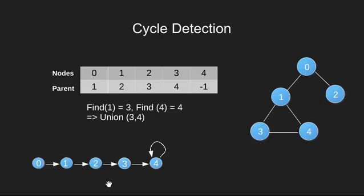We now choose this last edge connecting node 3 and 4. We do find of 3 and it gives 4, and find of 4 which gives 4. Since both 3 and 4 belong to the same set, we say that we have found a cycle and with this we can stop our algorithm.